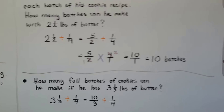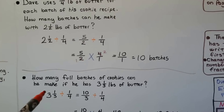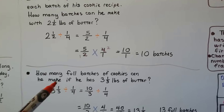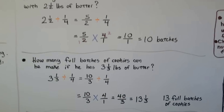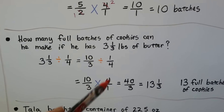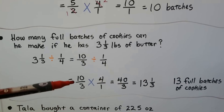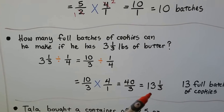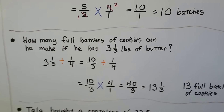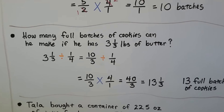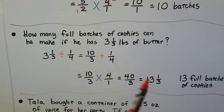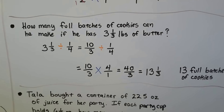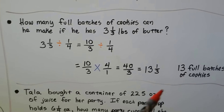How many full batches of cookies can Dave make if he has 3 and 1/3 pounds of butter? We do 3⅓ divided by 1/4. Convert 3⅓ to an improper fraction: 3 times 3 is 9, plus 1 is 10 — so 10/3. Divide by 1/4, flip to 4 over 1 and change to multiplication. 10 times 4 is 40 over 3 times 1 is 3 — that's 13 and 1/3 batches. But the question asks for full batches, so the answer is 13 full batches. The wording is really important — make sure you're answering exactly what's being asked.